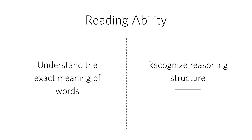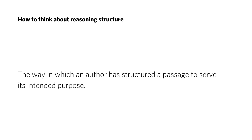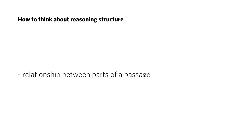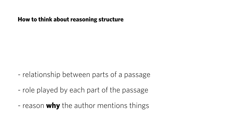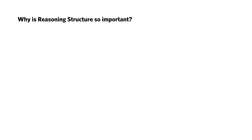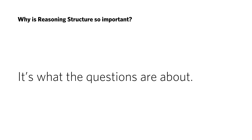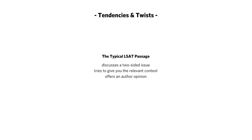The other reading ability they test — and to me this is the main crux of all reading comp — is your ability to recognize reasoning structure. Reasoning structure is the way that an author has structured a passage in order to serve whatever purpose it's meant to serve. You can think of it as the relationship between different parts of a passage, the role played by each part, and — my favorite — the reason why the author mentions each of the things he or she mentions. It's the one skill most important when it comes time to answer the problems.